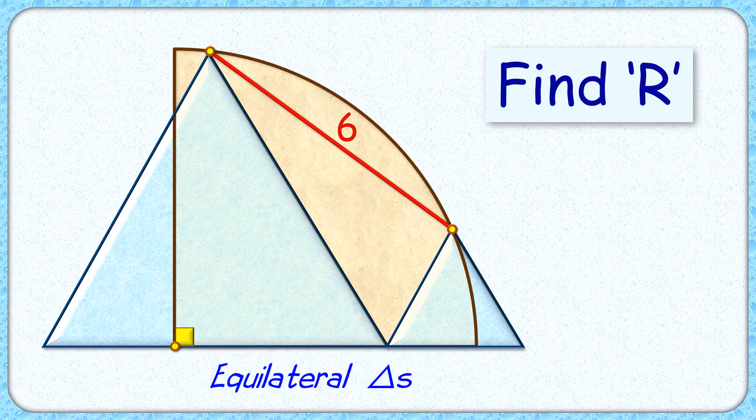Hello everyone, this interesting question given is a quadrant and two equilateral triangles whose vertices are lying on the circumference of the quadrant. The distance between these vertices is 6 centimeters. The exciting part is with this limited data we have to find the radius of the quadrant.